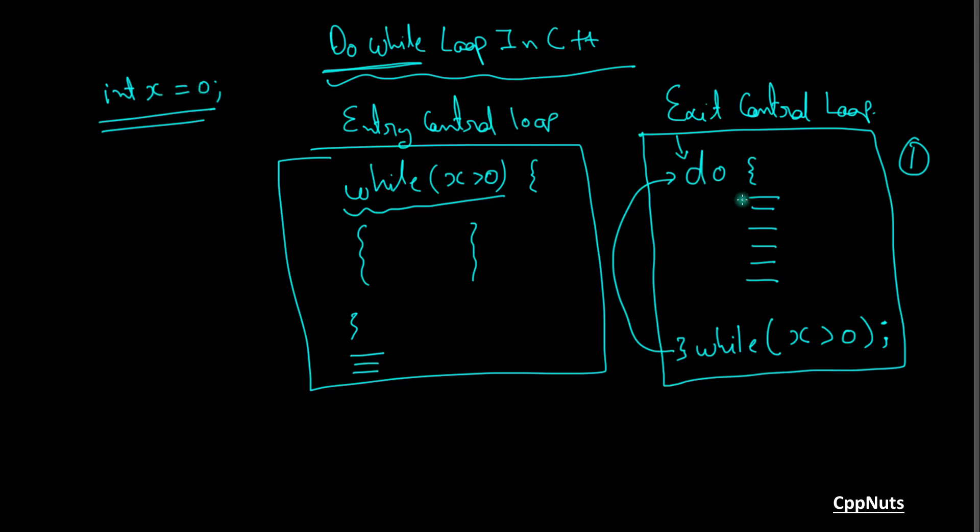Let's suppose this x is equal to 0 and you wanted to print, let's call cpp nuts and you printed that. After that you check x is greater than 0, no, then you won't go back, you will terminate. So that's why this is called exit control because we are having this condition check at exit time. This is your exit area. This is the entry area. So that's why it is called exit control loop and this is how it work.